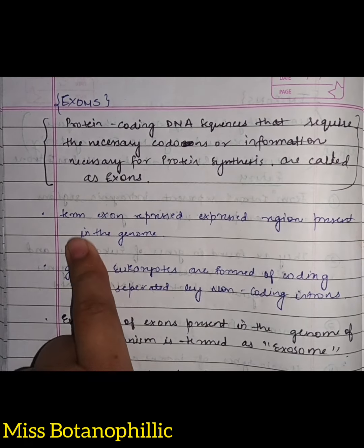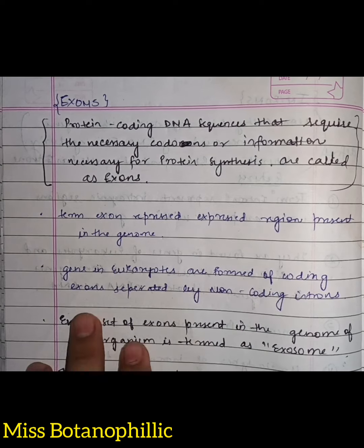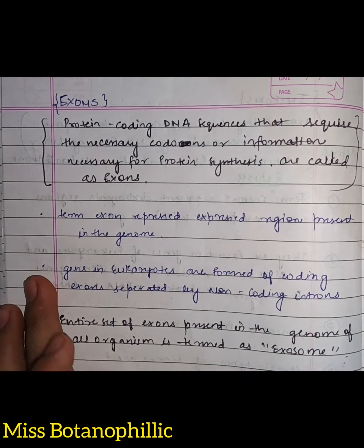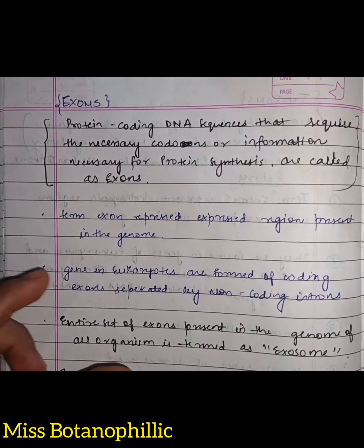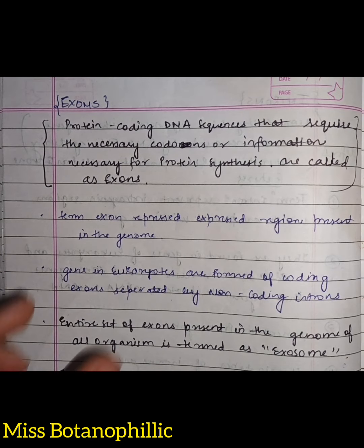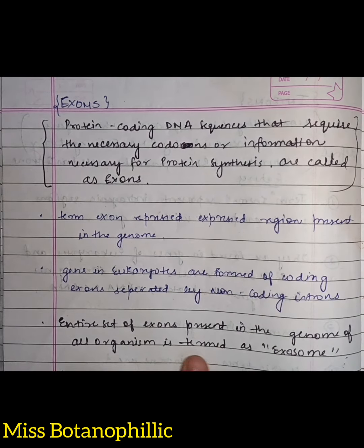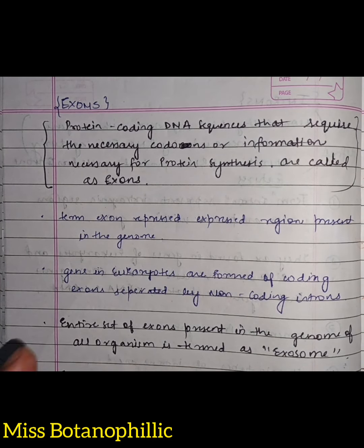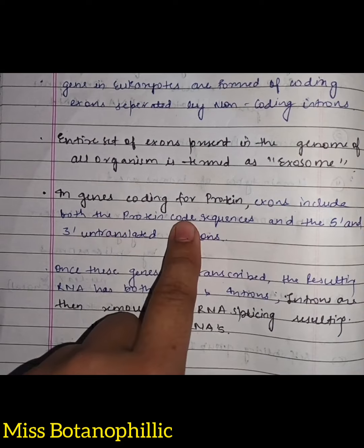The term exon represents the expressed region present in the genome. Genes in eukaryotes are formed of coding exons separated by non-coding introns, so the series goes: exon, intron, exon, intron — in this way, the location of exons and introns within a particular gene is observed. The entire set of exons present in a genome of all organisms is termed the exome.